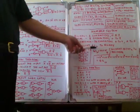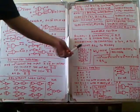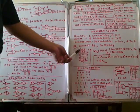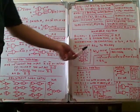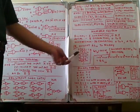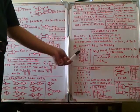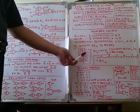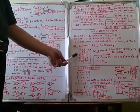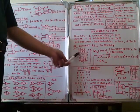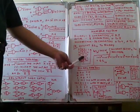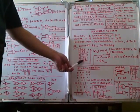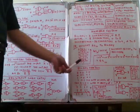To convert 45 from decimal to binary, we divide by two repeatedly. 45 divided by two gives 22 remainder 1. 22 divided by two gives 11 remainder 0. 11 divided by two gives 5 remainder 1. 5 divided by two gives 2 remainder 1.